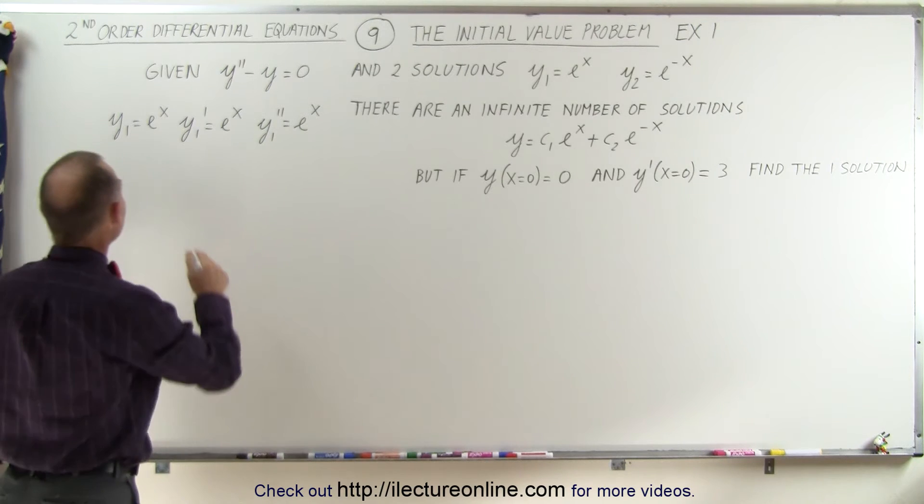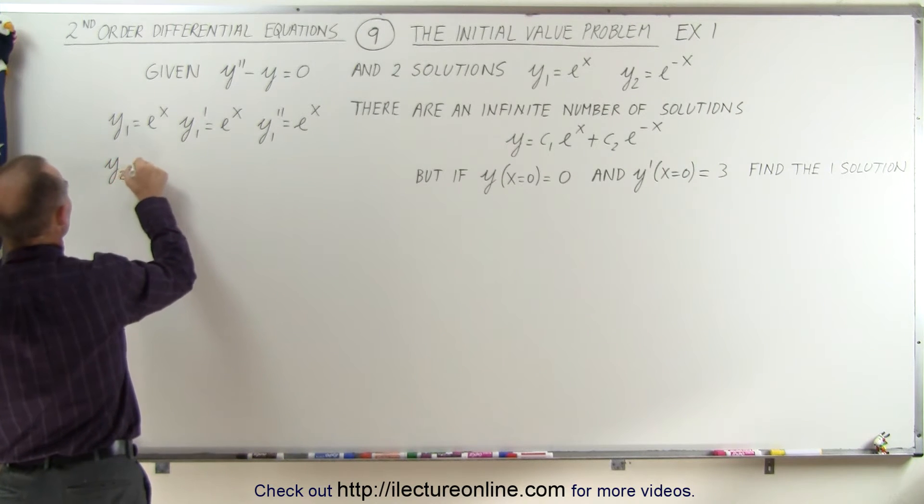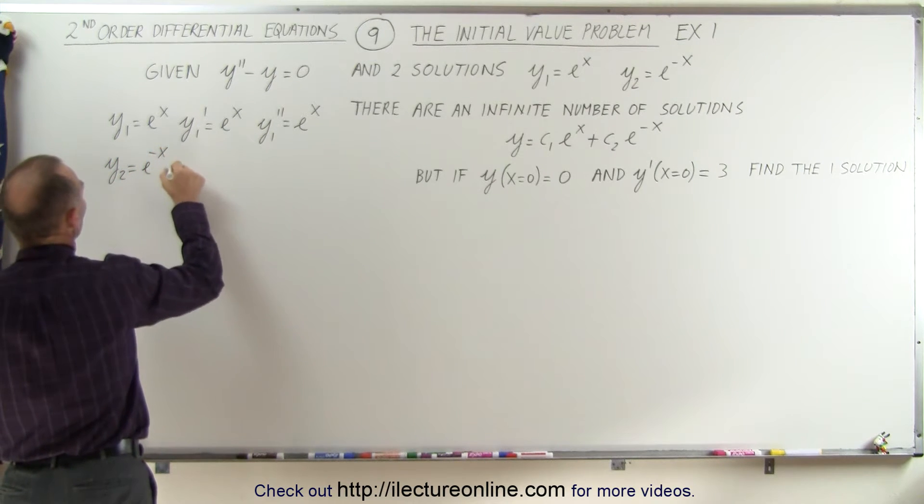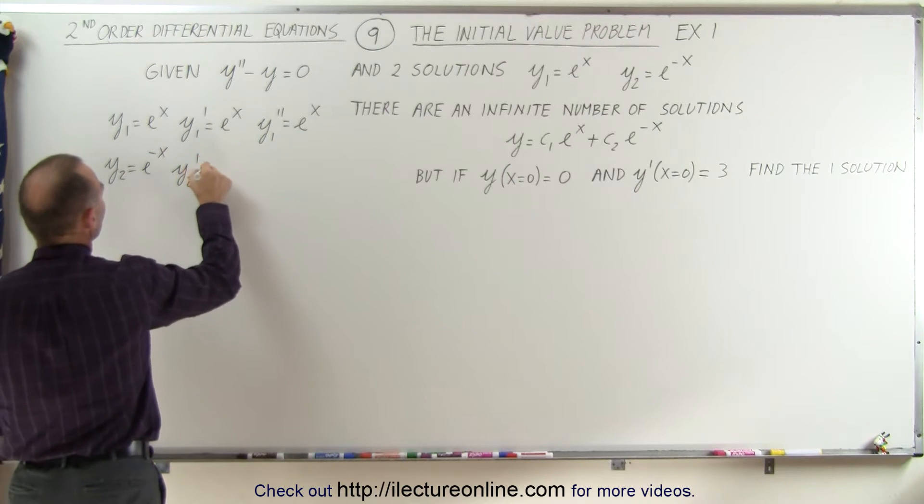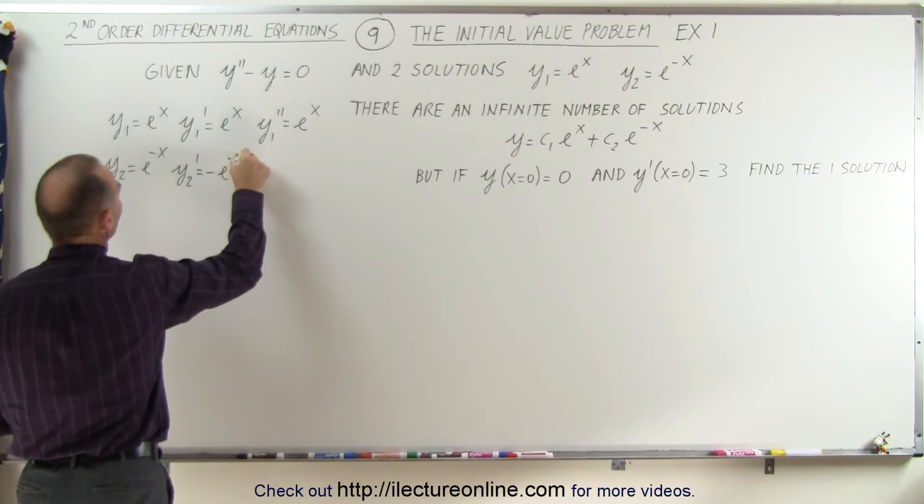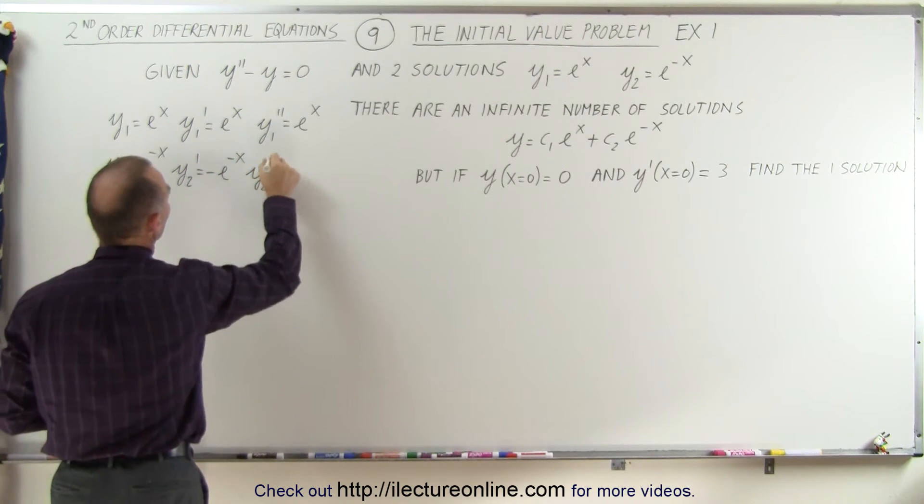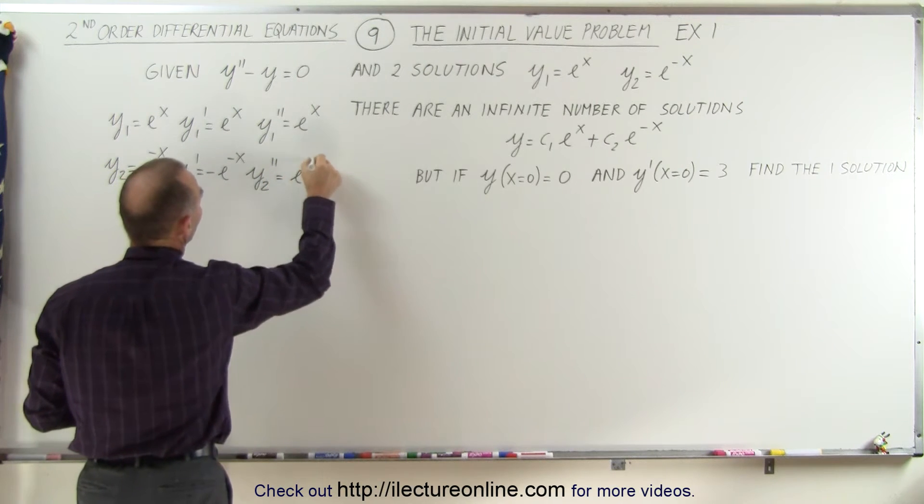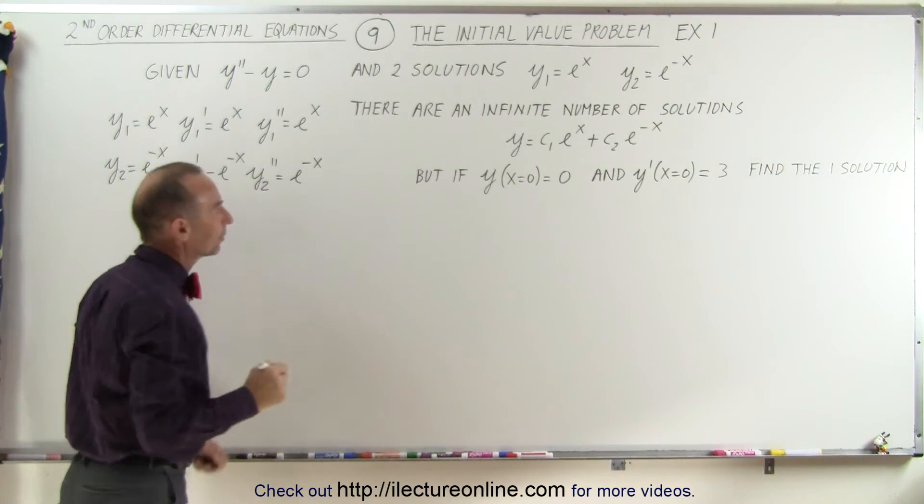And then we can take y2, which is e to the minus x, which means y2 prime is equal to minus e to the minus x, and y2 double prime is equal to, again, e to the minus x, because the negatives cancel out.